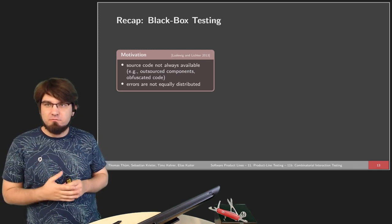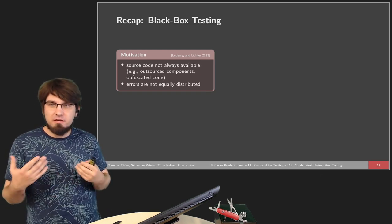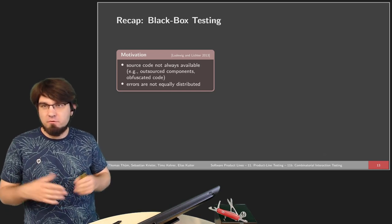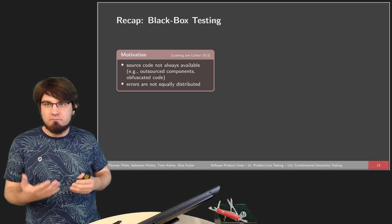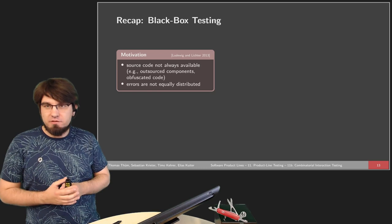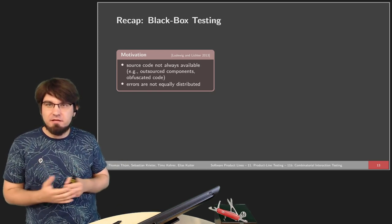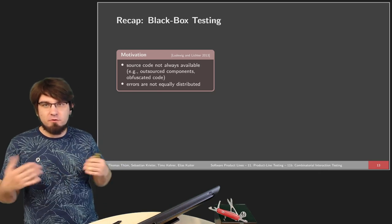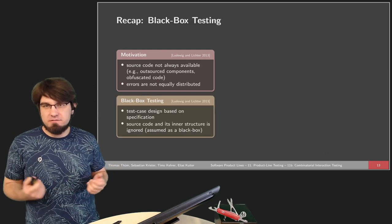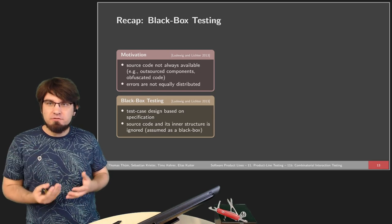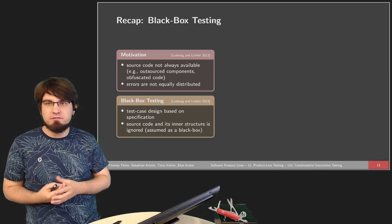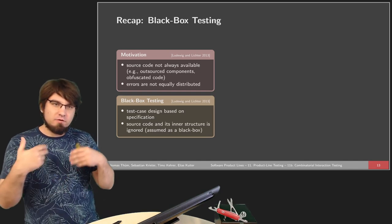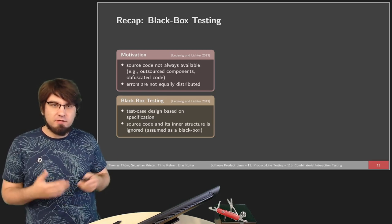First, a small reminder: when we want to test software product lines, we typically have some problems aside from availability. We also have problems like in normal system testing — the source code may not be available, for example, with outsourced components, obfuscated code from other parties, or when we simply choose to ignore the code. Another problem is of a statistical nature: we don't know how errors are distributed in our source code — it's normally not an equal distribution, but we don't know the actual distribution either.